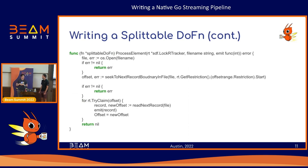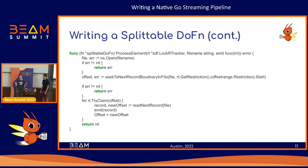The last key element is you accept the lock R tracker in your process element function. You do your work — open your file — and use the restriction tracker to try to claim work to process. This is how multiple workers coordinate what work is or isn't done. Your restriction tracker has a try claim function: you give some position in the restriction you want to operate on, and it returns a Boolean — yes, that's available, process it; or no, that's already been done, don't. If you can claim it, you get your record, read it, emit it, and advance your restriction tracker to the next record. If not, you're done processing — return nil and you're ready to go.